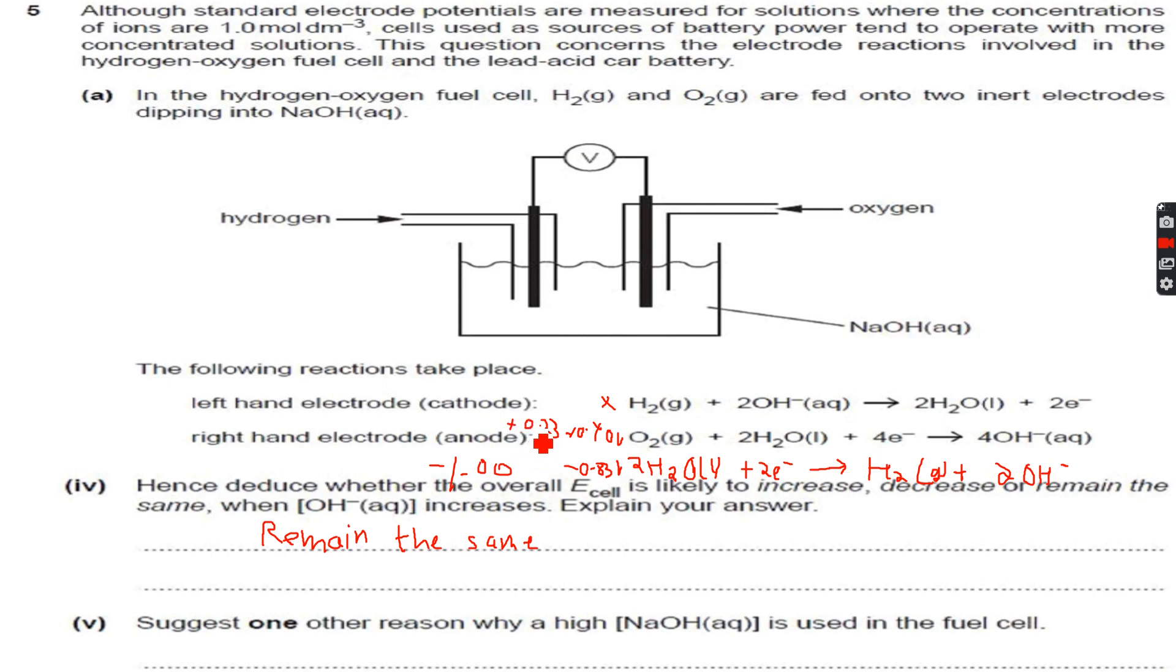So we use the equation they have given us. This becomes +1.00, so +1.00 plus +0.23 equals 1.23 volts, and that was what we got initially. So it remains the same.